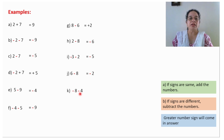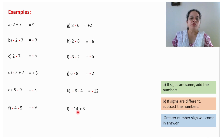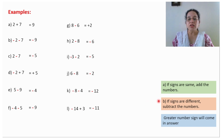Signs are same, add the number — 8 plus 4 will give you 12 — greater number sign will come in the answer, so the answer will be minus 12. Signs are different, subtract the number — 14 minus 3 will give you 11 — greater number sign will come in the answer, so this is minus 11. If you are using this method, this will be easier for you to get the answer.